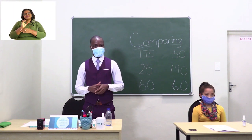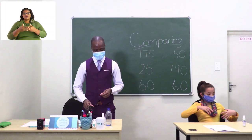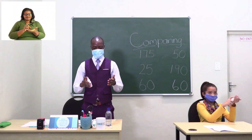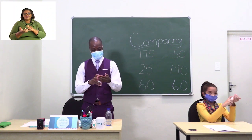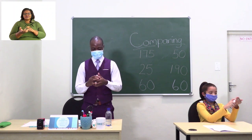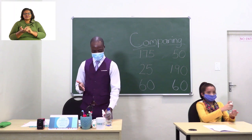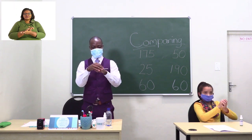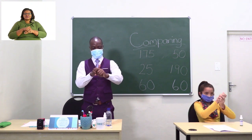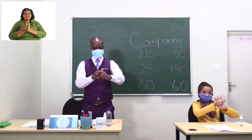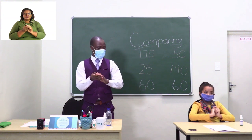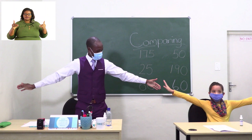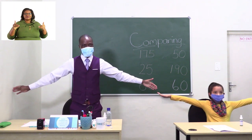Before we go any further, we are supposed to start by sanitizing our hands. When you are sanitizing your hands, we start by spraying inside the palm. After spraying inside the palm, we rub right around all the fingers. When you are done, we are supposed to maintain social distance. I think it's fine now.